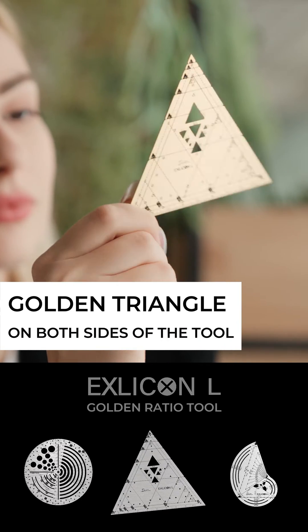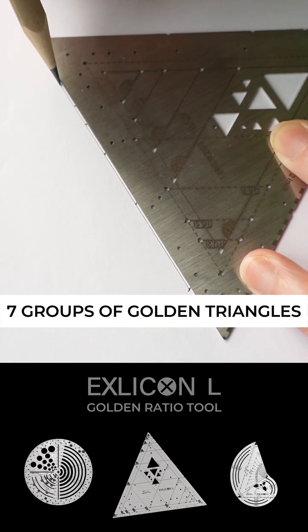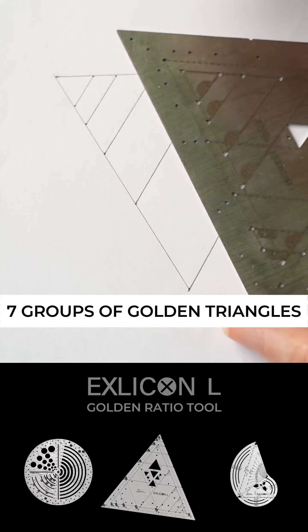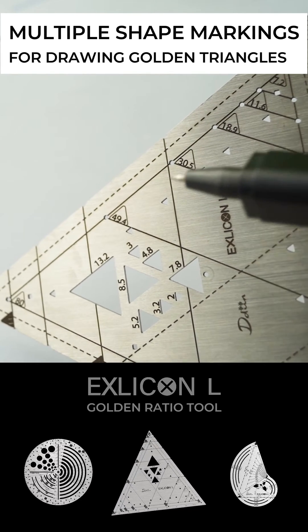Triangle tool features a total of seven groups of golden triangles on both sides, making it suitable for a diversity of users that fulfills their creative and technical needs. There are multiple shape markings to help easy readings for the golden triangles.